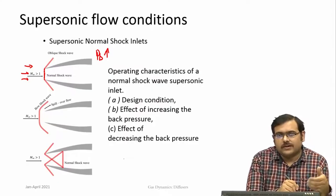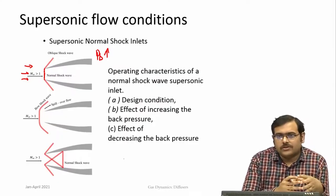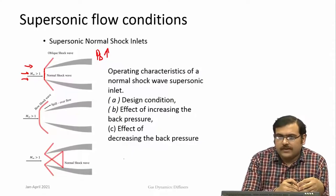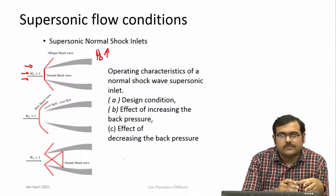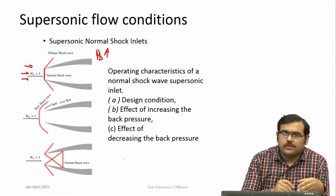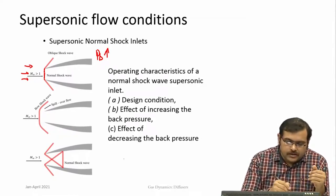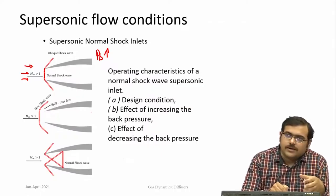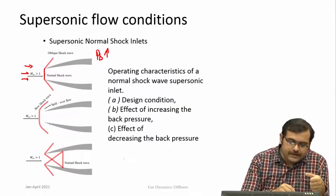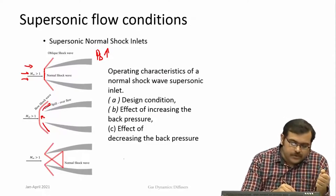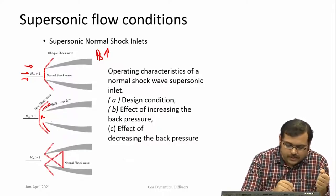These are normal shock intakes. When you have normal shocks, there is large entropy production, so efficiency takes a hit, though it does provide good compression. If the mass flow requirement is further reduced, the normal shock is pushed away from the lip of the intake and flow spills over. You then have a bow shock — nearly normal near the intake lip but curved elsewhere.